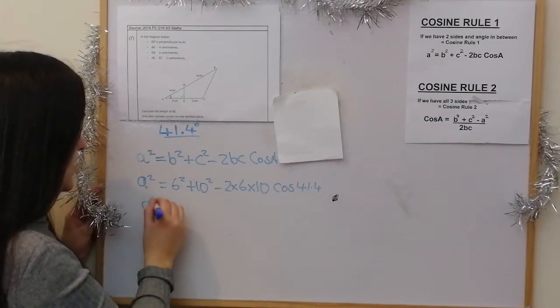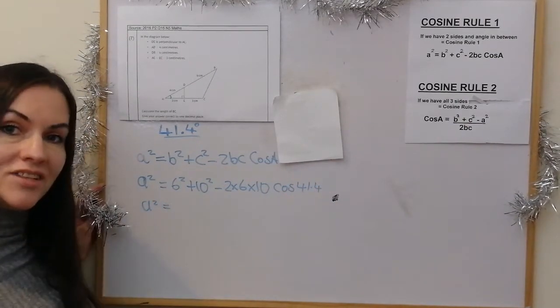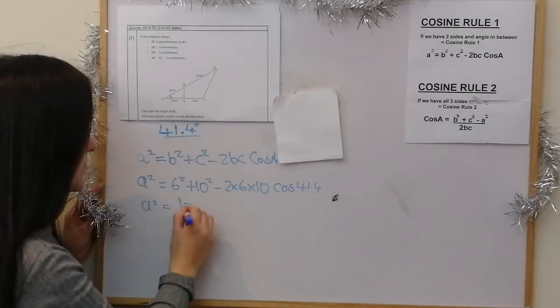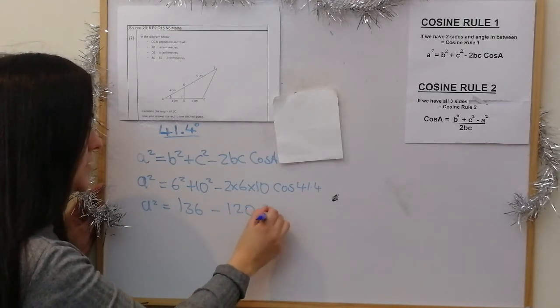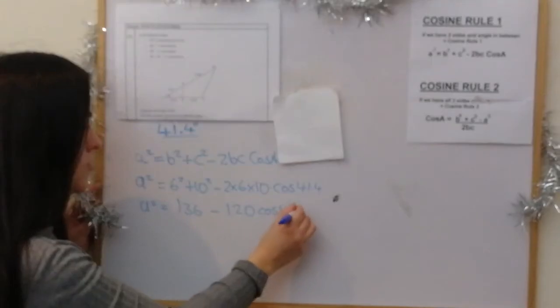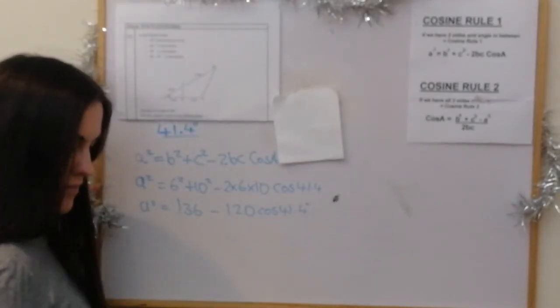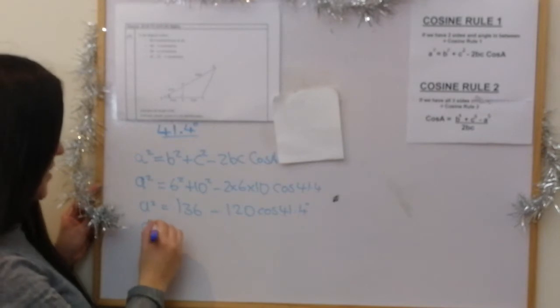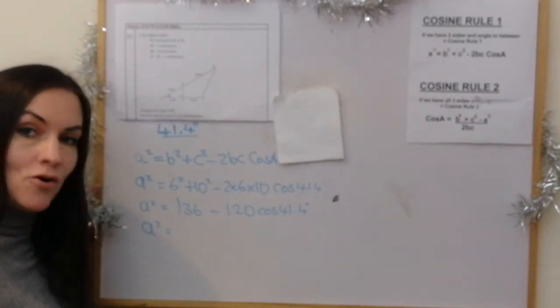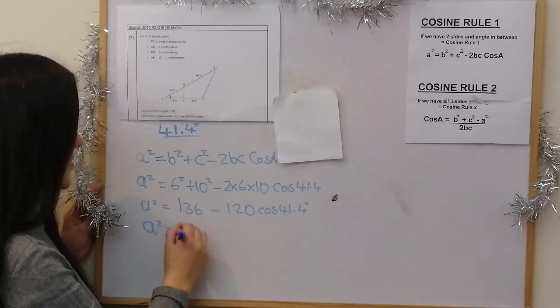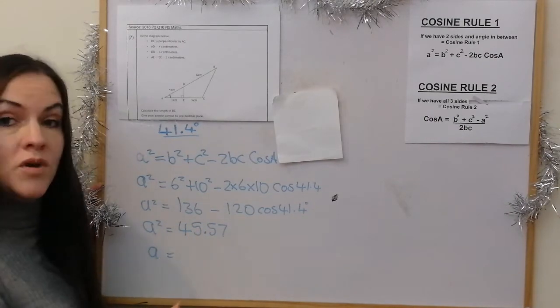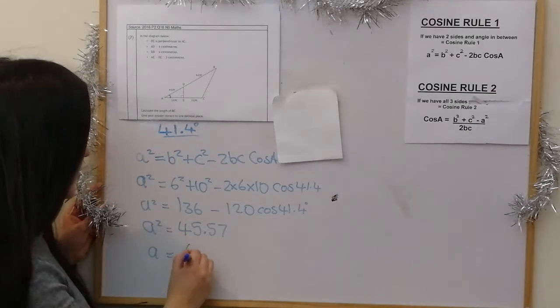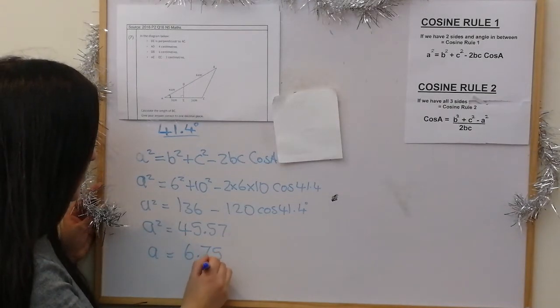So a squared is equal to 136, take away 120 cos 41.4 degrees. So a squared becomes 45.57, and then a is obviously the square root of that, which is 6.75 centimeters.